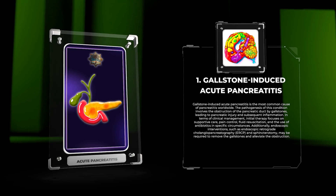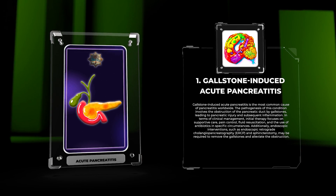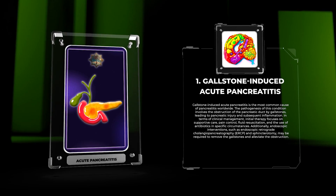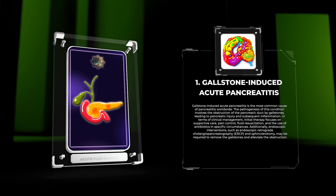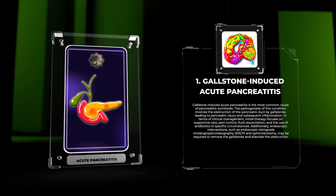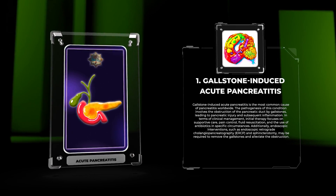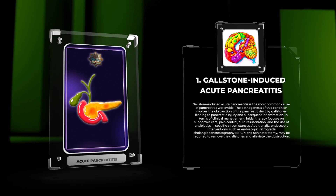Additionally, endoscopic interventions such as endoscopic retrograde cholangiopancreatography (ERCP) and sphincterotomy may be required to remove the gallstones and alleviate the obstruction.